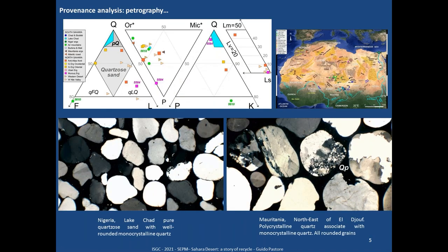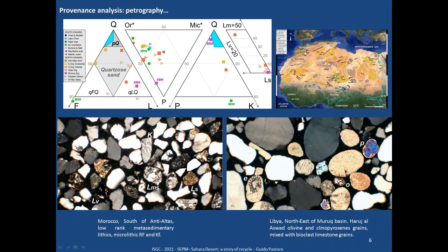Looking at the petrography results, our samples plot so concentrated that we had to place them in a light-blue polygon, because more than 95% of the composition is quartz. This is the typical aspect of Sahara sand — very well-rounded grains with braided rims, typical of recycled or polycrystalline quartz. We can also see some exceptions: south of the Anti-Atlas mountains we have low-rank metamorphic meta-sedimentary grains associated with K-feldspar.